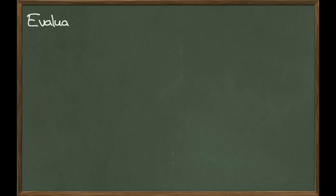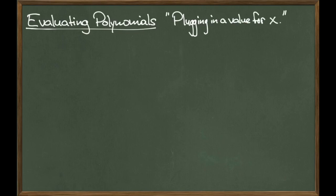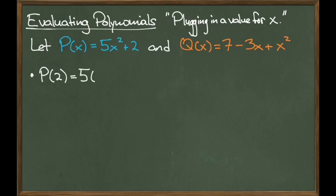Now we're going to try something different. It's called evaluating polynomials at a particular value. This means that we are going to replace our variable X with a specific number. Let P of X be the polynomial 5X squared plus 2, and let Q of X be the polynomial 7 minus 3X plus X squared. The first problem I'll tackle is evaluating P of 2. This means that in the polynomial P of X, everywhere I see the letter X, I will replace it with the number 2, like so. Following the order of operations, I get 22 as an answer.